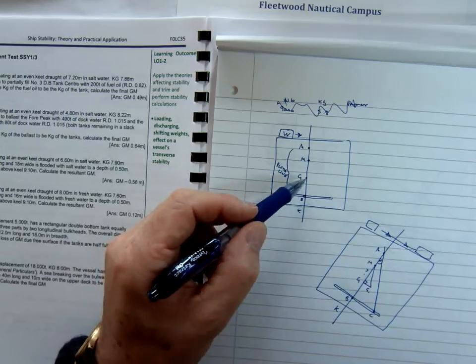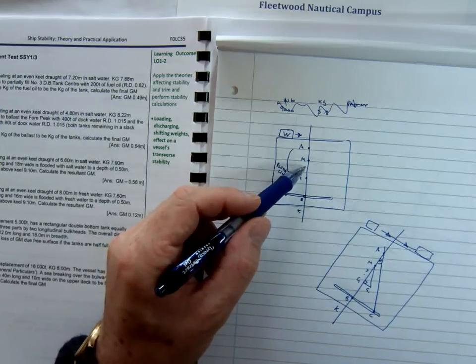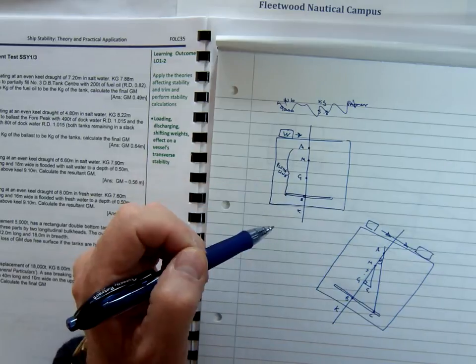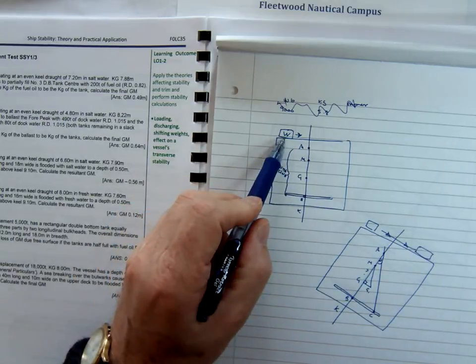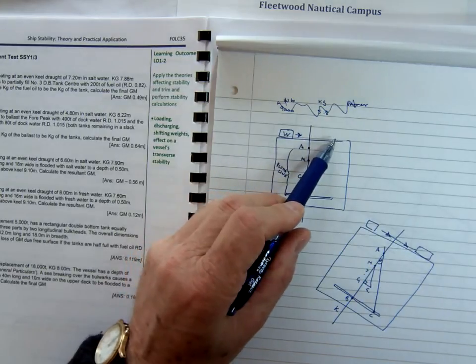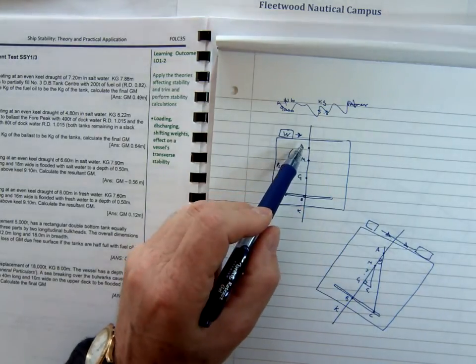So if we can find the gm of the vessel, then we could find the kg, because it's simply km minus gm. We place this weight on deck, and the weight is moved across. As the weight is moved across, the vessel inclines.